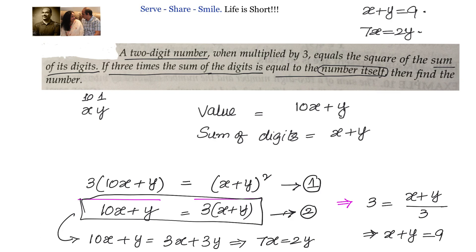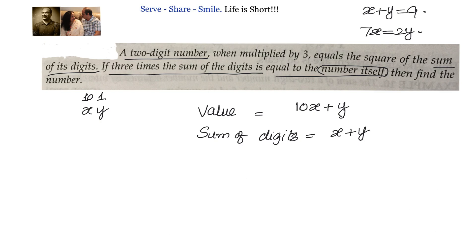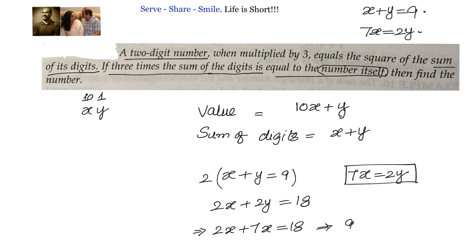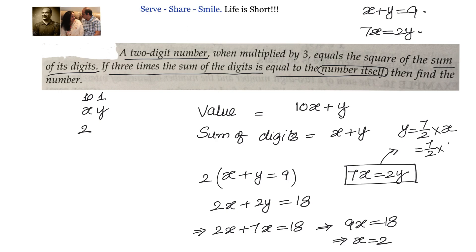Let us leverage these two equations and solve the problem. We have x + y = 9 and 7x = 2y. I will multiply the first equation by 2: it becomes 2x + 2y = 18. Since 2y equals 7x, we can write 2x + 7x = 18, so 9x = 18, giving x = 2. Then y = (7/2) × x = (7/2) × 2 = 7. So the number is 27.